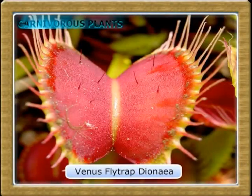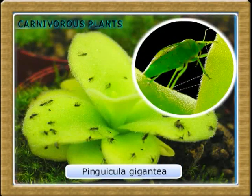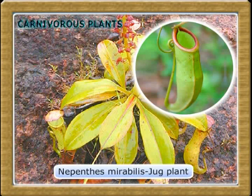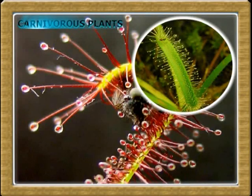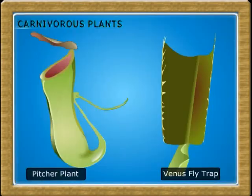There are some plants which are carnivorous. The insectivorous plants belong to this category. Though these plants are autotrophs, the consumption of insects boosts their growth.